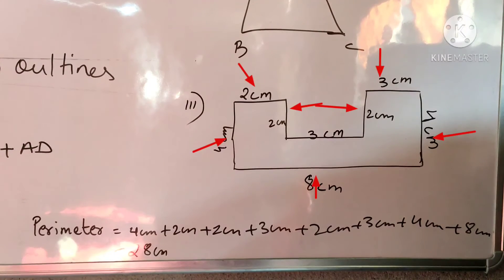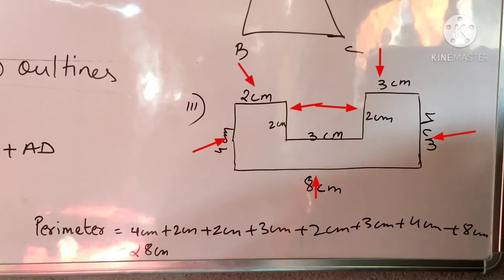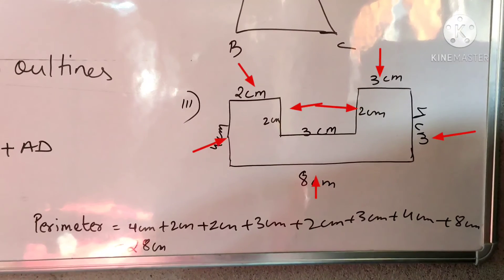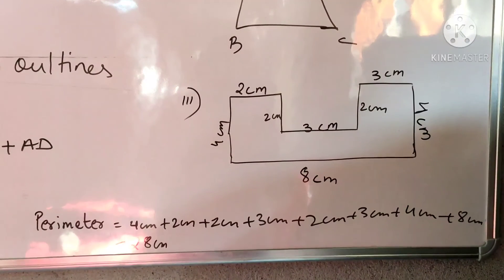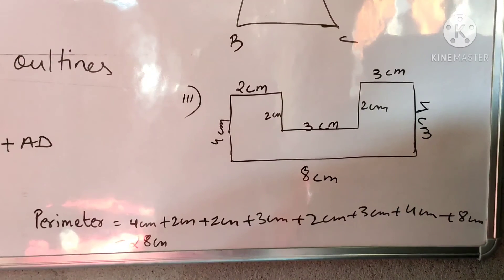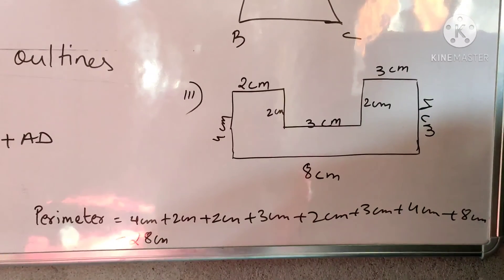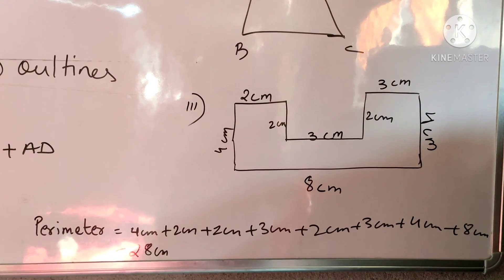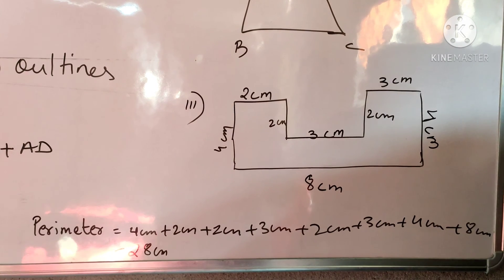So when we add all the given measurements, we get the answer as 28 centimeters, which will be the answer for this particular given figure. So in this way, you need to add all the boundaries to get the perimeter of the given figure.